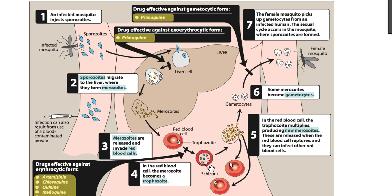The trophozoite forms a schizont, which then forms merozoites that destroy the red blood cell and go into the circulation to infect other red blood cells, repeating the cycle. This was discussed in detail in the previous video.